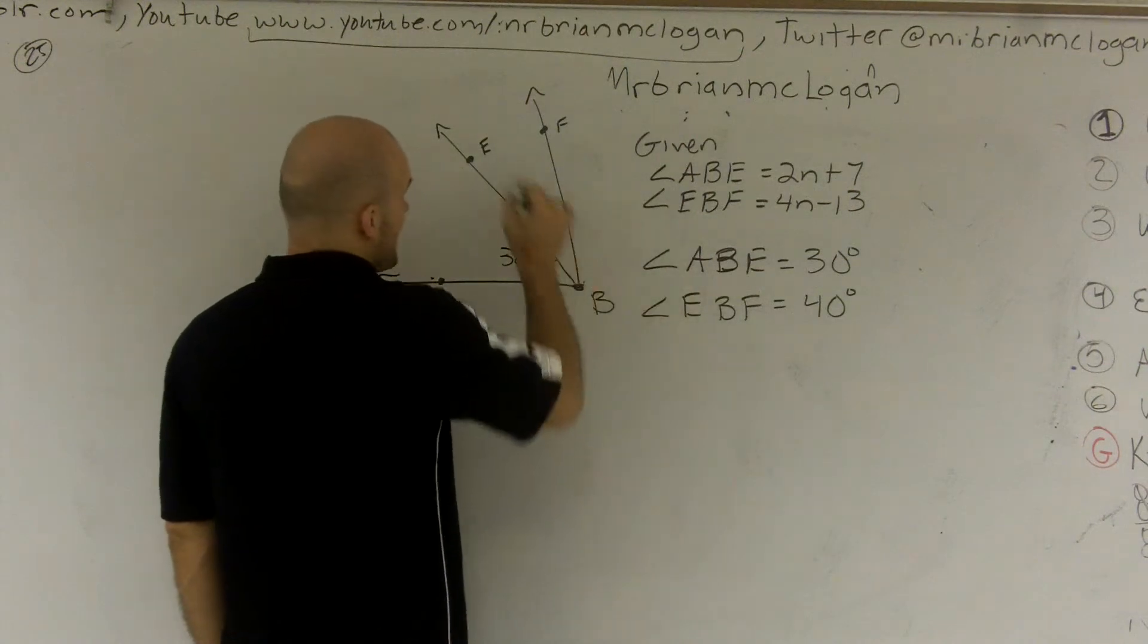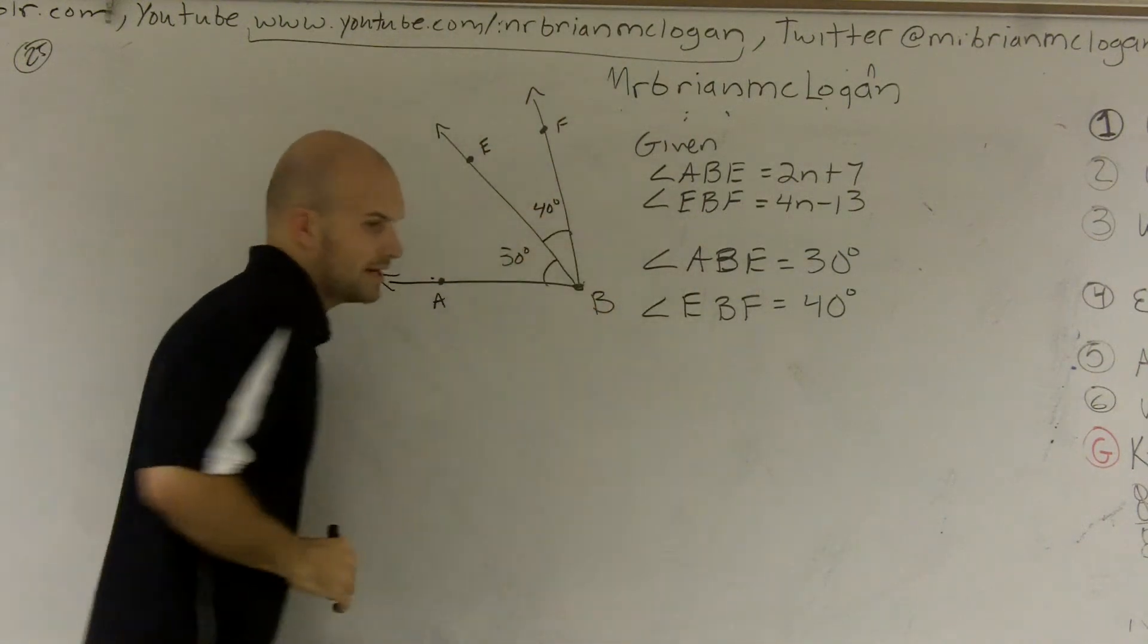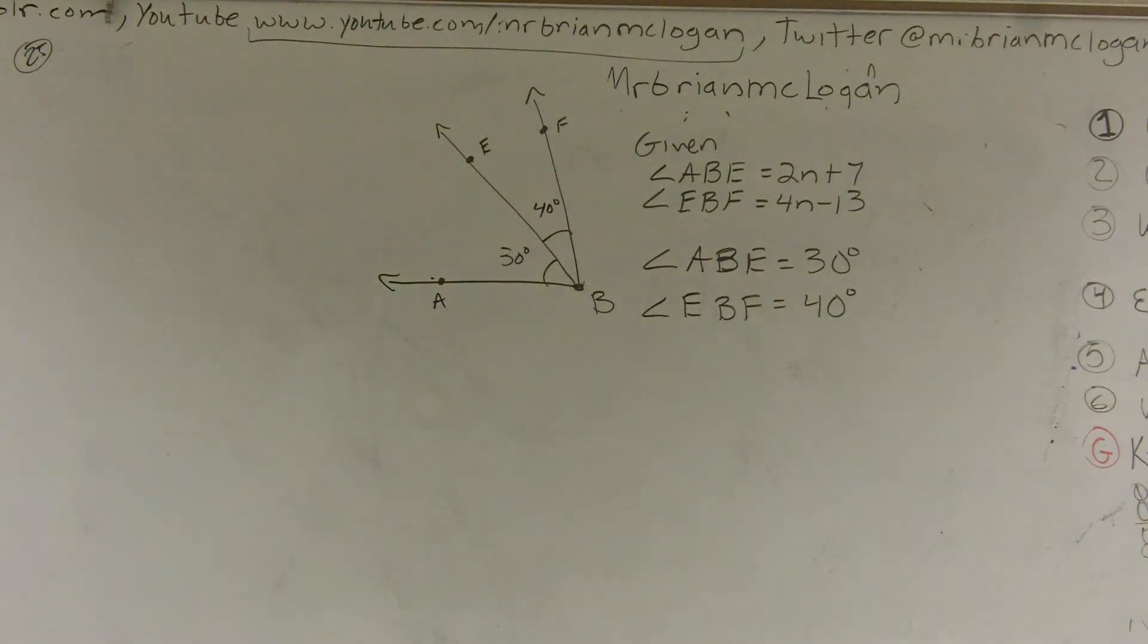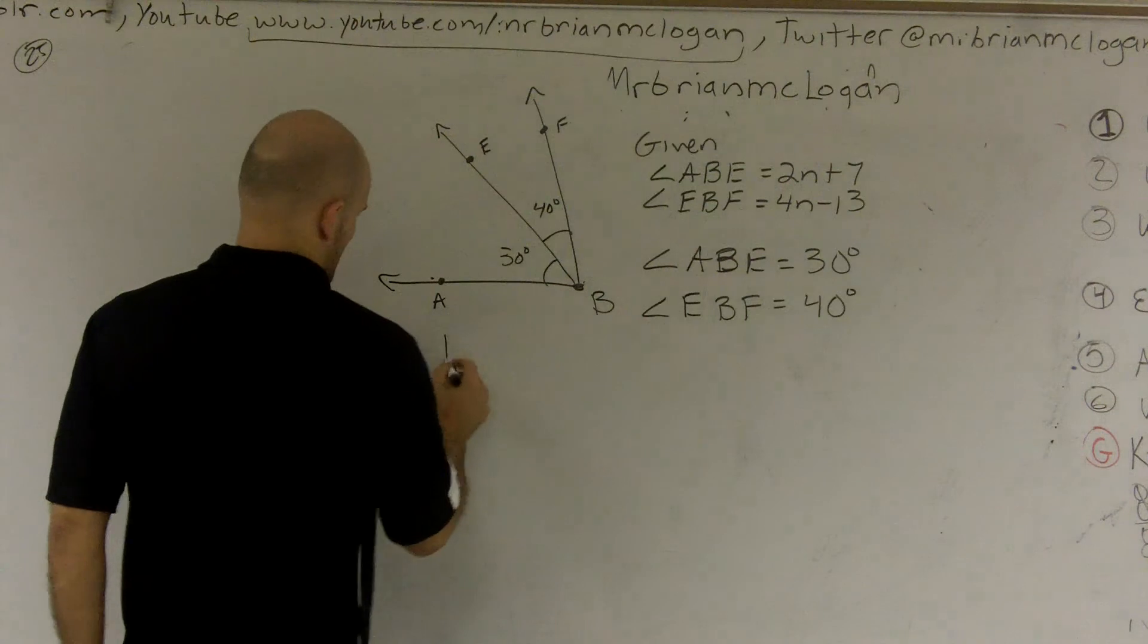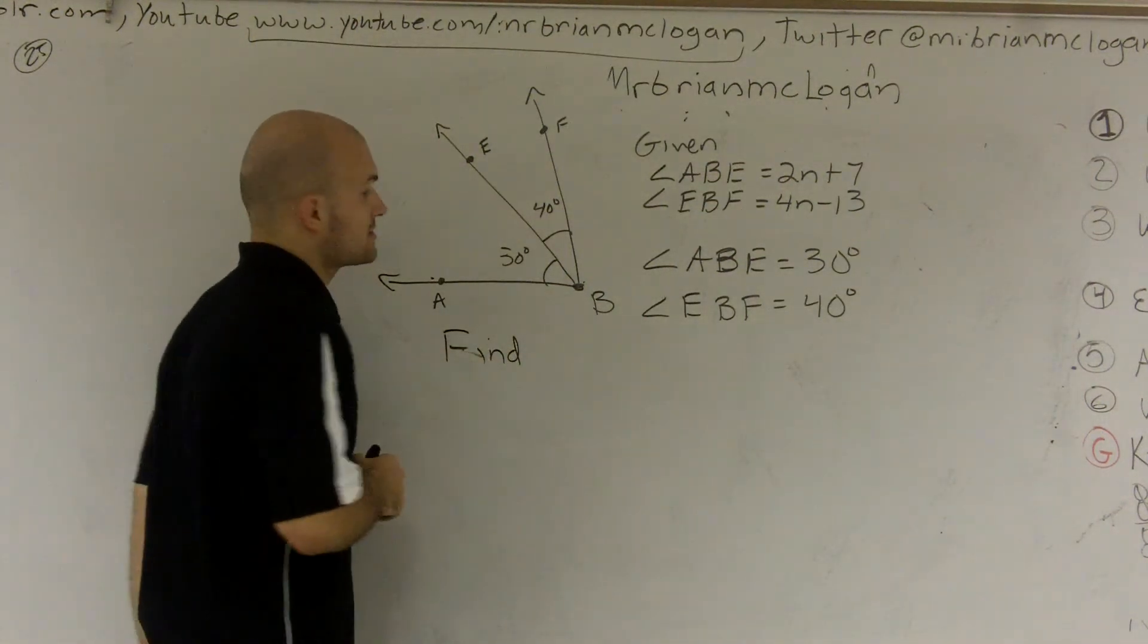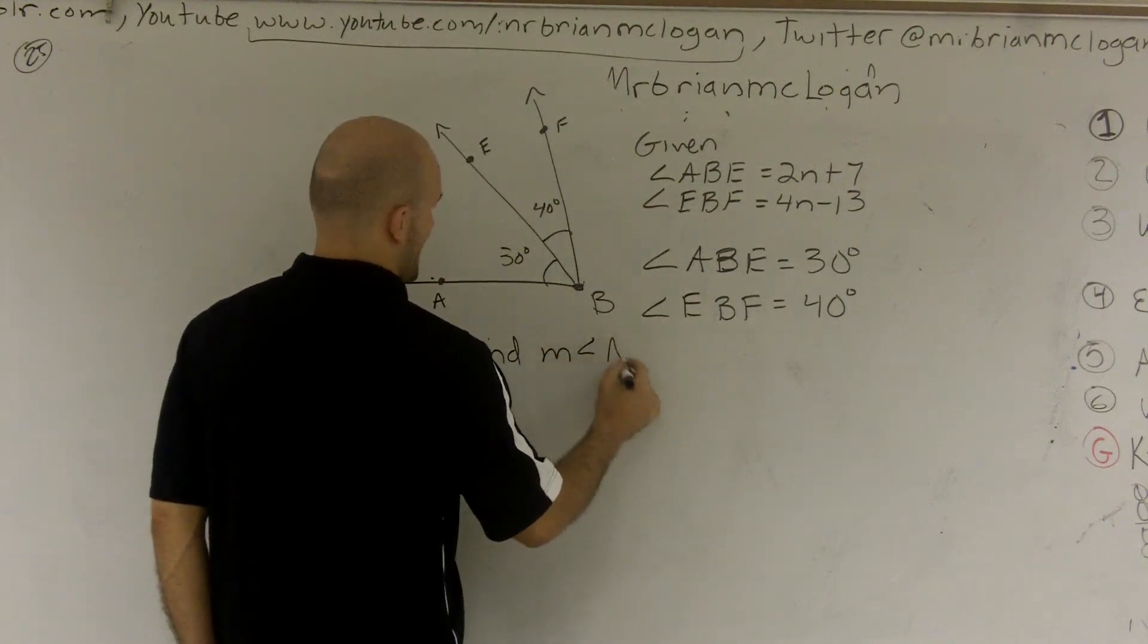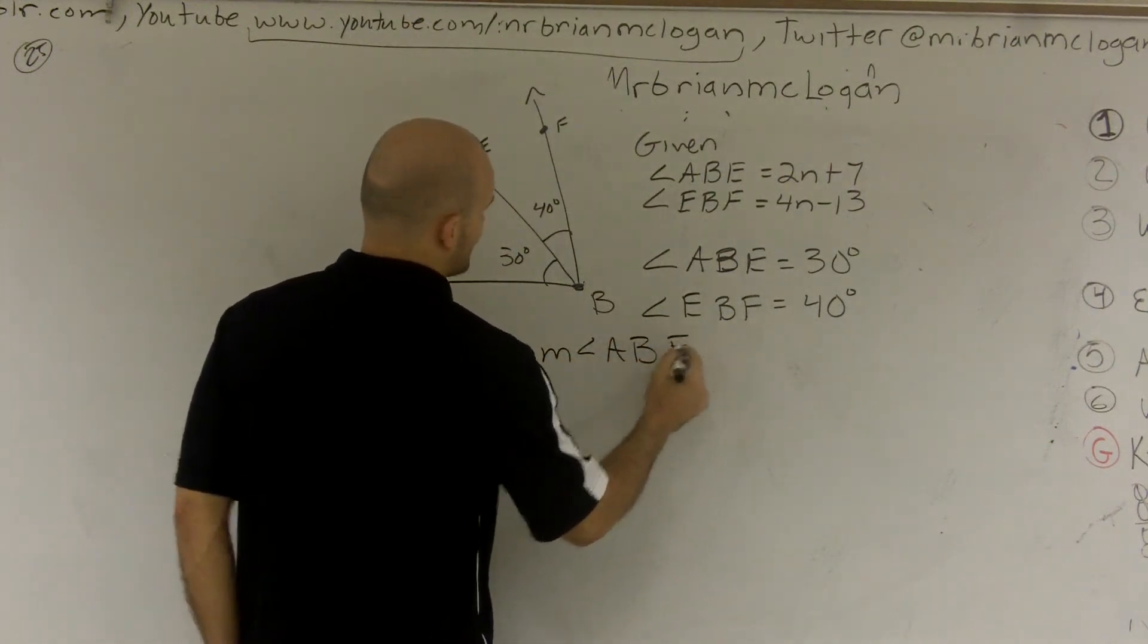Then I say angle EBF, E, B to F was equal to 40 degrees. All right? And my question is actually asking, find, now this is not drawn to scale, all right? So please excuse me. But find the measure of angle ABF.